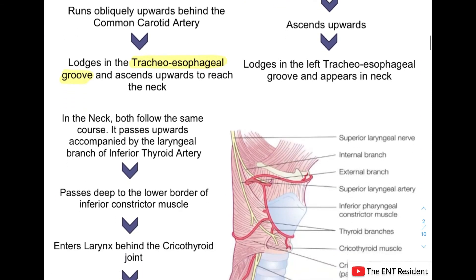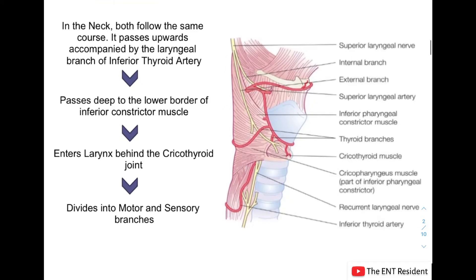Once it has appeared in the neck, both the right and left recurrent laryngeal nerves follow a similar course. It passes upwards accompanied by the laryngeal branch of the inferior thyroid artery, passes deep to the lower border of the inferior constrictor muscle, and enters the larynx behind the cricothyroid joint — which is very important to know.